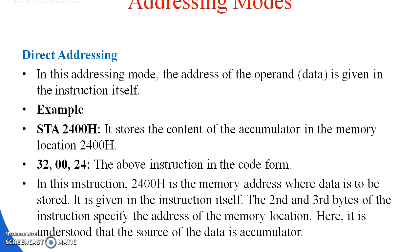In the instruction STA 2400H, the address 2400H is the memory address where data is to be stored and it is specified in the instruction itself. The second and third bytes of the instruction contain the address of the memory location. The source of the data is the accumulator.